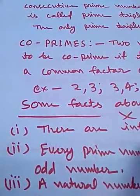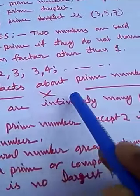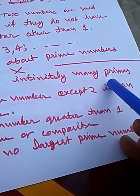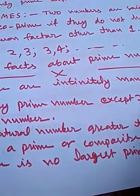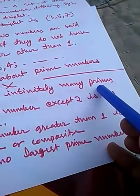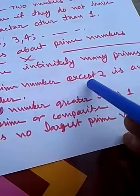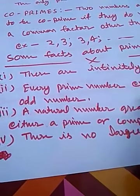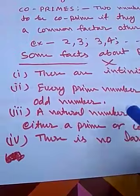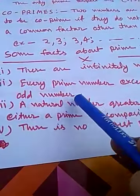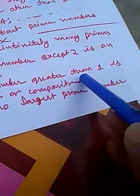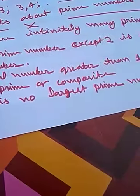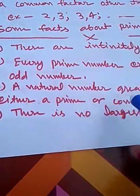Now we shall learn about some facts about prime numbers. First: there are infinitely many primes — we cannot count all the prime numbers. Second: every prime number except 2 is an odd number; only 2 is an even prime. Third: any natural number greater than 1 is either prime or composite.